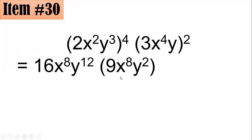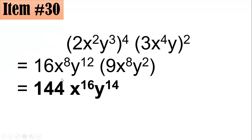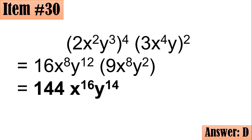For the second term: 3 squared is 9, x to the fourth squared is x to the eighth, and y squared. Now multiplying: 16 times 9 is 144. For the x terms, x to the eighth times x to the eighth is x to the 16th. For y: y to the twelfth times y squared is y to the 14th. So the answer is 144x to the 16th y to the 14th. Letter D.